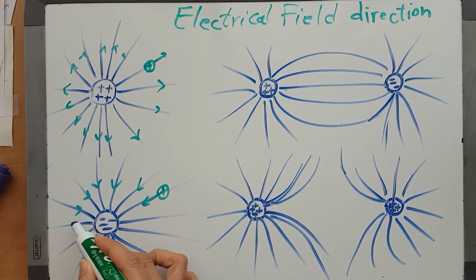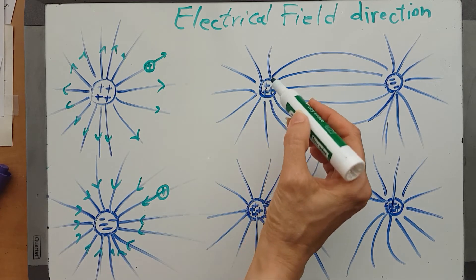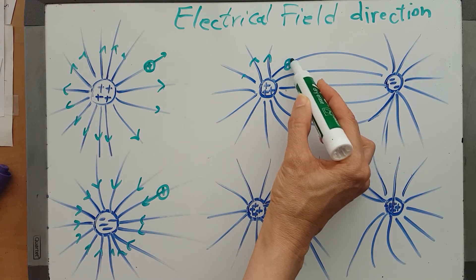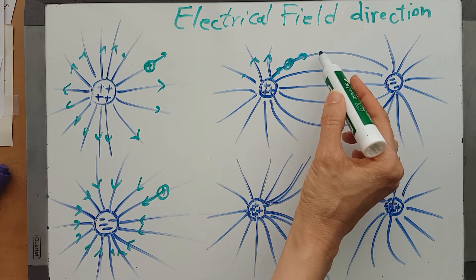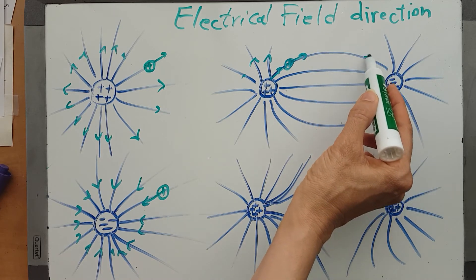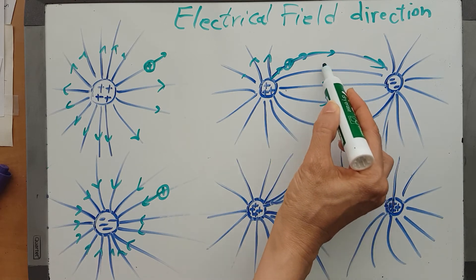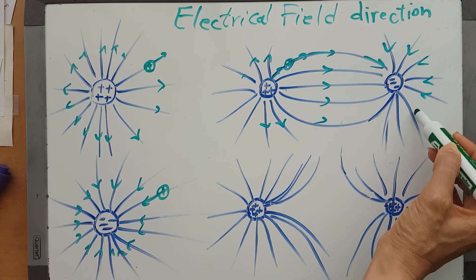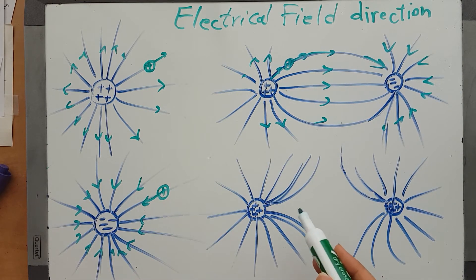So the direction in this case is inward. For the positive source charge, it says 'go away' to the positive test charge, and for the negative charge it says 'come here' — it attracts it. So the field goes inward toward the negative charge, and between them it goes from positive to negative. Near the positive charge, it is outward.